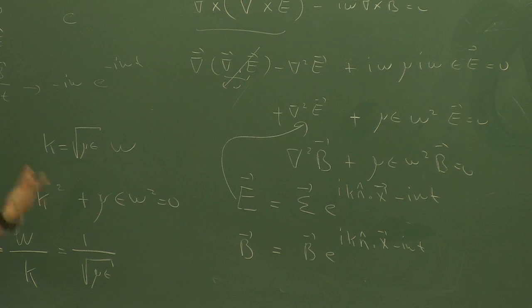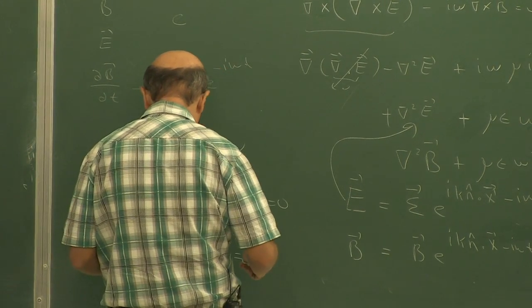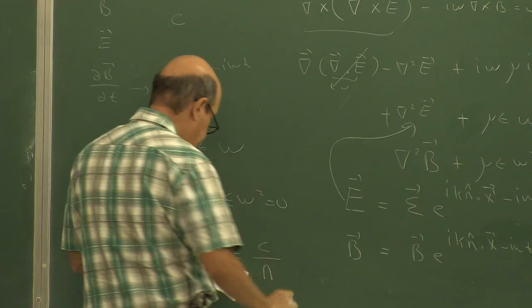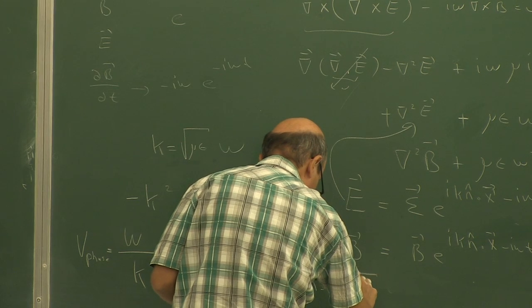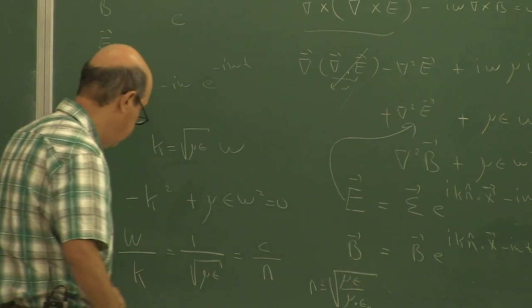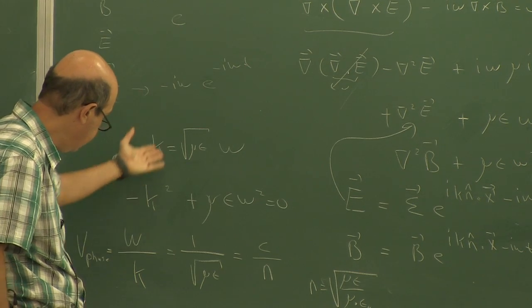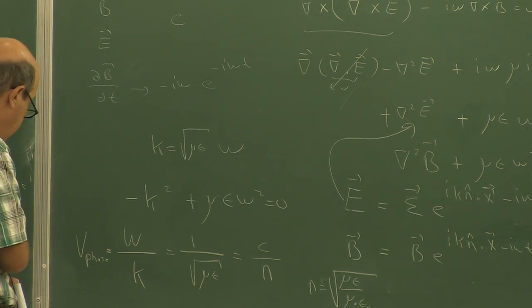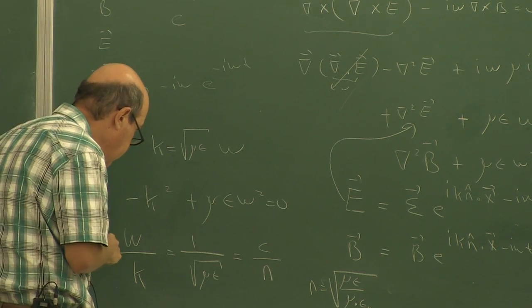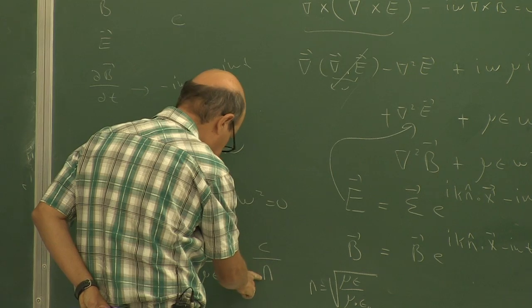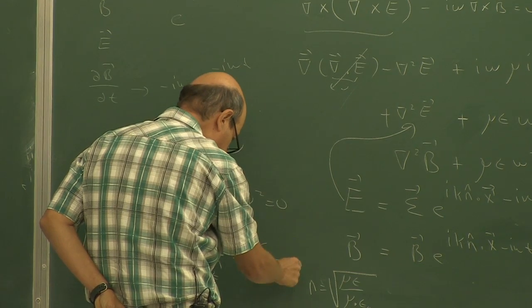The dispersion relation K² = mu epsilon omega² is commonly used in more complex cases. In plasma physics you have much more complicated dispersion relations because you have sources. But once you know the relation between omega and wave number K, you know the phase velocity omega/K, and you can calculate the group velocity d omega/d K. The group and phase velocities will differ in waveguides.